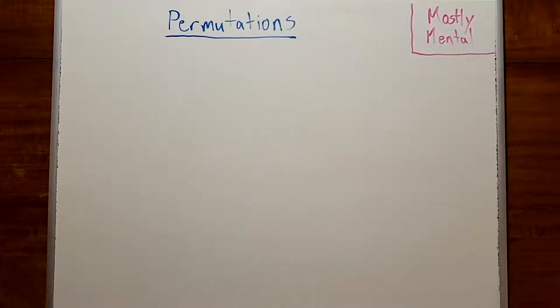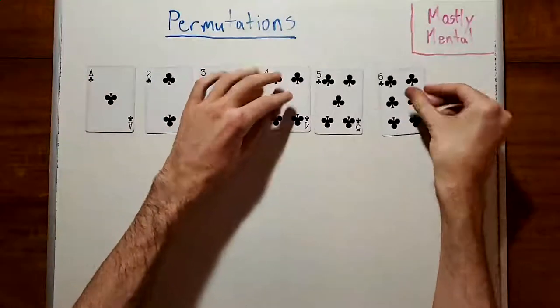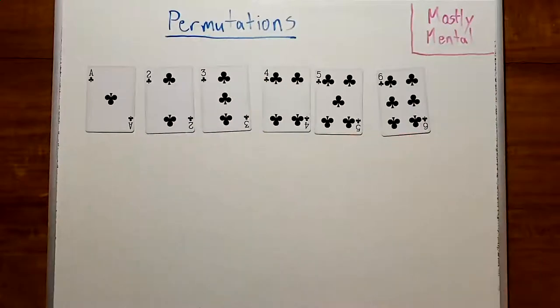We talked a bit about permutations a few videos back, but to recap, a permutation is an arrangement of a collection of objects into an order. So, you might imagine shuffling a deck of cards, or arranging the numbers 1 through n.